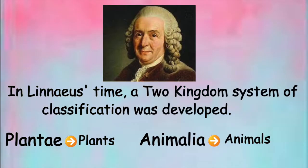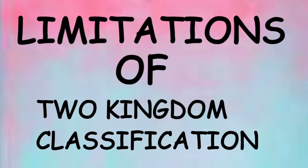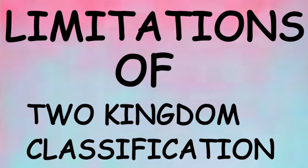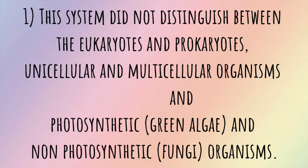In later time, a two-kingdom system of classification was developed: Plantae, a kingdom for plants, and Animalia, a kingdom for animals. Limitations of this two-kingdom classification: this system did not distinguish between eukaryotes and prokaryotes, unicellular and multicellular organisms, and photosynthetic and non-photosynthetic organisms.